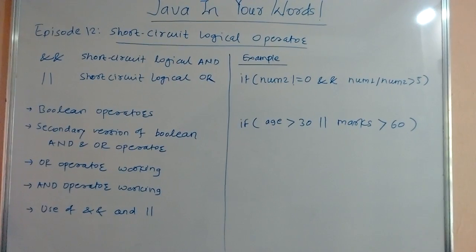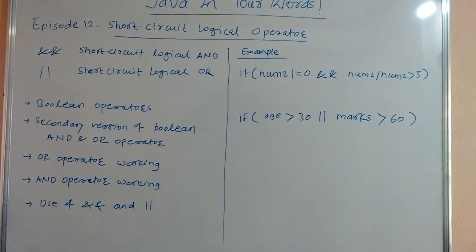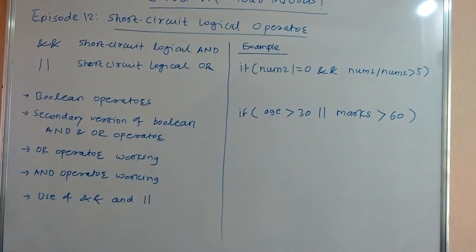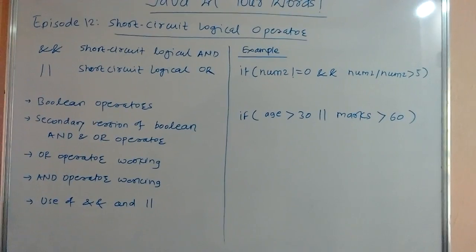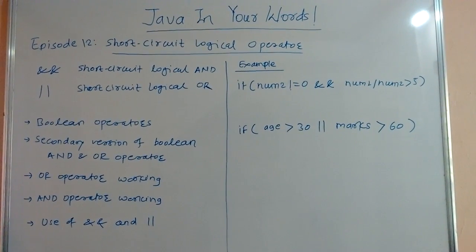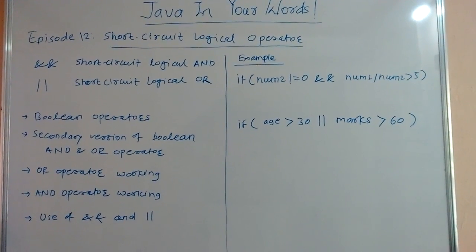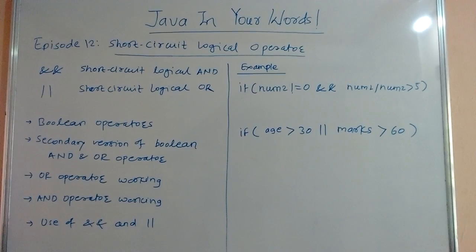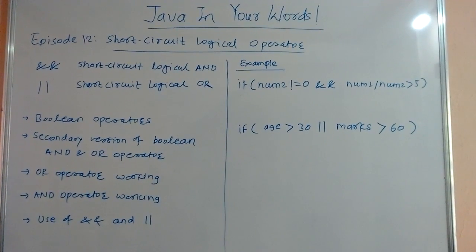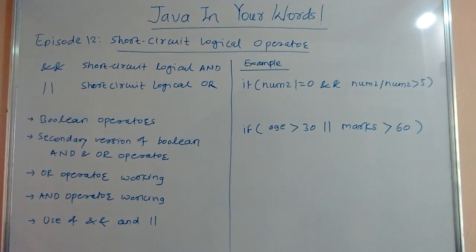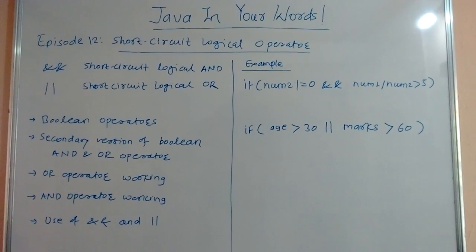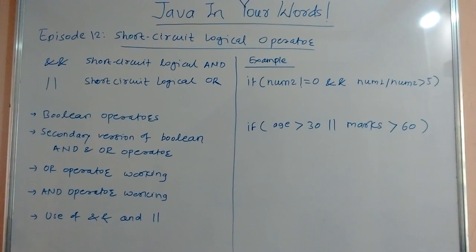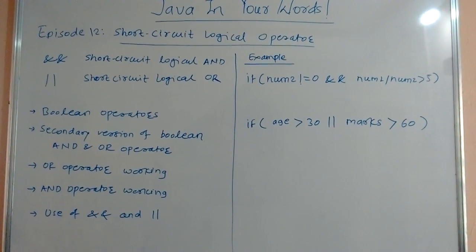In the second example: if age is greater than 30, short-circuit logical OR, marks is greater than 60. In this case, if the first expression — age is greater than 30 — becomes true, then it is not necessary to check the second expression, because ultimately it results in true.